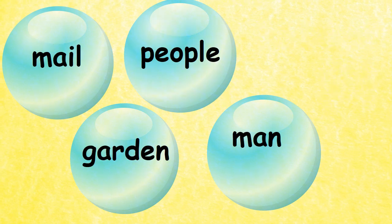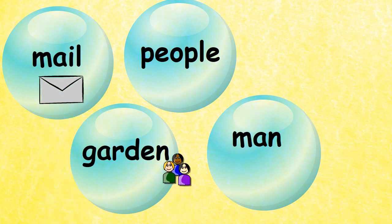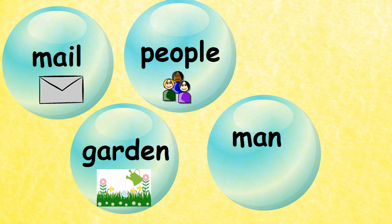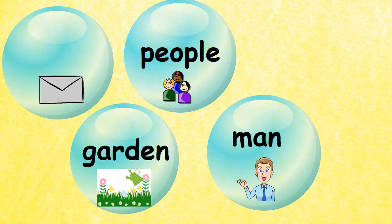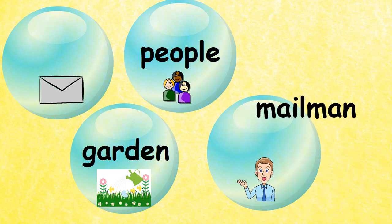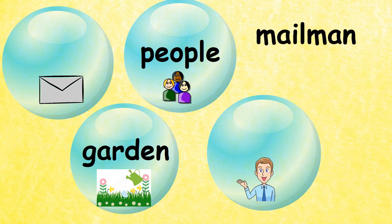Here we have male, people, garden, and man. To make our compound word we are going to use male and man, and this will give you mailman.